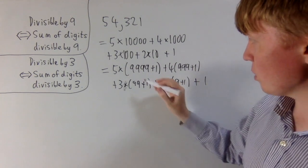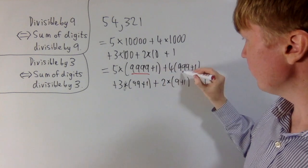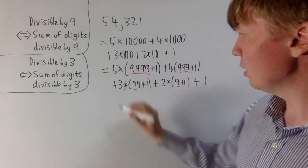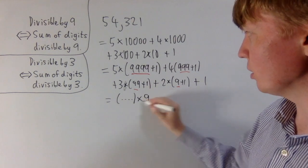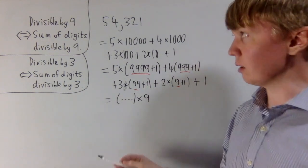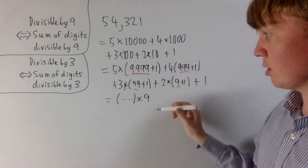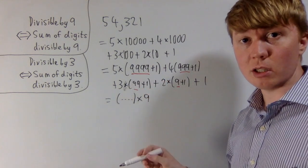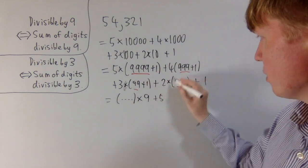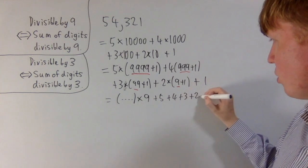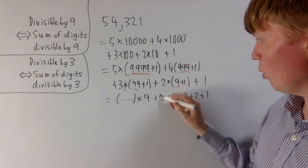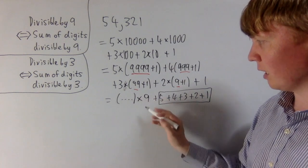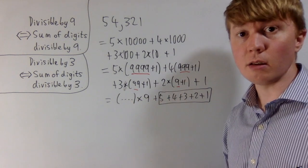So we can start with divisibility by 9. We've got a multiple of 9 here, a multiple of 9 here, here, and here. When we expand the brackets, all of these terms give us just some integer multiplied by 9 — a multiple of 9. For our number to be divisible by 9, we need to write it as an integer times 9. What's left over is actually just our sum of digits: 5 plus 4 plus 3 plus 2 plus 1. The sum of digits is 15, so we've got something times 9 plus 15 — this isn't going to be divisible by 9.